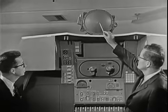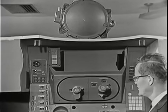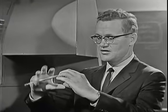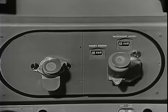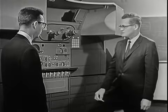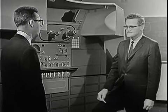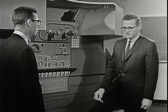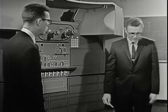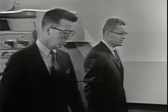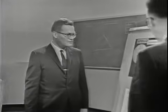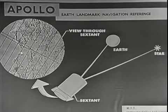The inertial measurement unit, shown up here but normally mounted in the back, consists of gyros and accelerometers that measure the angles and velocity of the spacecraft. The spacecraft rotates, and the inertial measurement unit holds the reference so that angles can be measured. The sextant is an instrument very similar to that used by sailors to navigate on the surface of the Earth. The most basic problem is to determine the position at any point in time, and that can be illustrated in these charts.